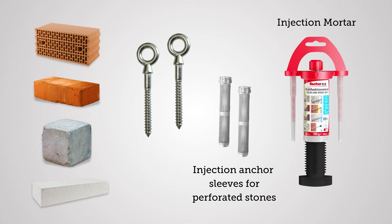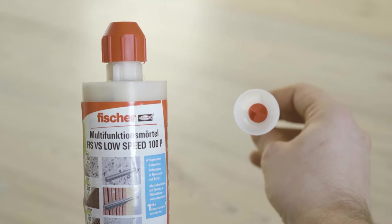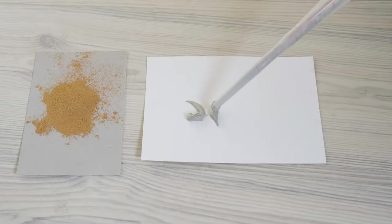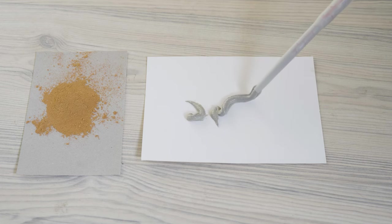In this case, the ring bolts are fixed with a so-called injection mortar. In addition, we supply anchor sleeves so that the mortar does not run completely into the air chambers of perforated bricks. You can think of this mortar as a superglue for stones. When it is pressed out, two chemical components are mixed, and we effectively glue the screw into the borehole.